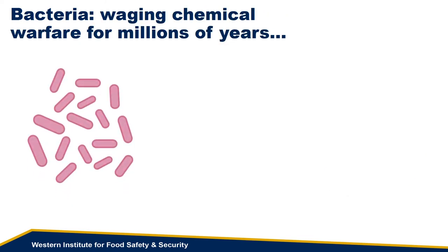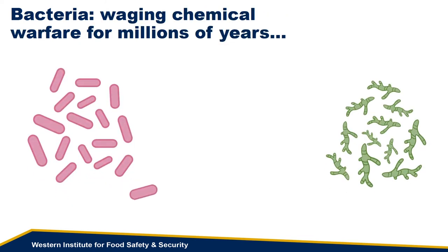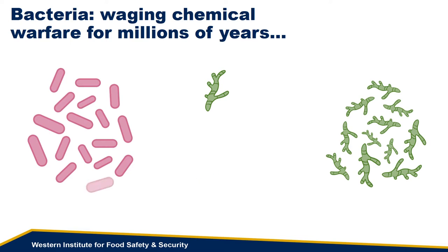Over those billions of years, microorganisms have competed against each other for dominance. A sort of chemical arms race developed, with some microorganisms developing chemical weapons — or what we now know as antibiotics — to attack their neighbors in an effort to eliminate the competition. In response, other microbes developed defenses against these compounds, becoming what we refer to as antibiotic-resistant.